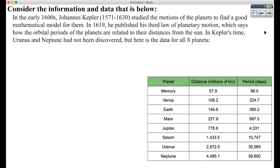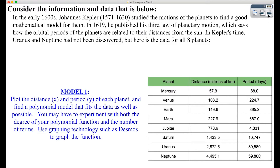There are going to be two models that we're going to be working with today, and here is the first one. You want to plot the distance on the x-axis and the period on the y-axis for each planet, and then find a polynomial model that fits the data as well as possible. You may have to experiment with both the degree of your polynomial function and the number of terms, but you can definitely use Desmos or any other graphing technology to help you graph this function.